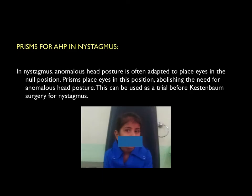In nystagmus, an abnormal head posture is often adopted to place the eyes in the null position. Prisms can help place the eyes in the null position, thereby abolishing the abnormal head posture. This can be used as a prism trial before performing Kestenbaum surgery for correction of abnormal head posture in nystagmus.